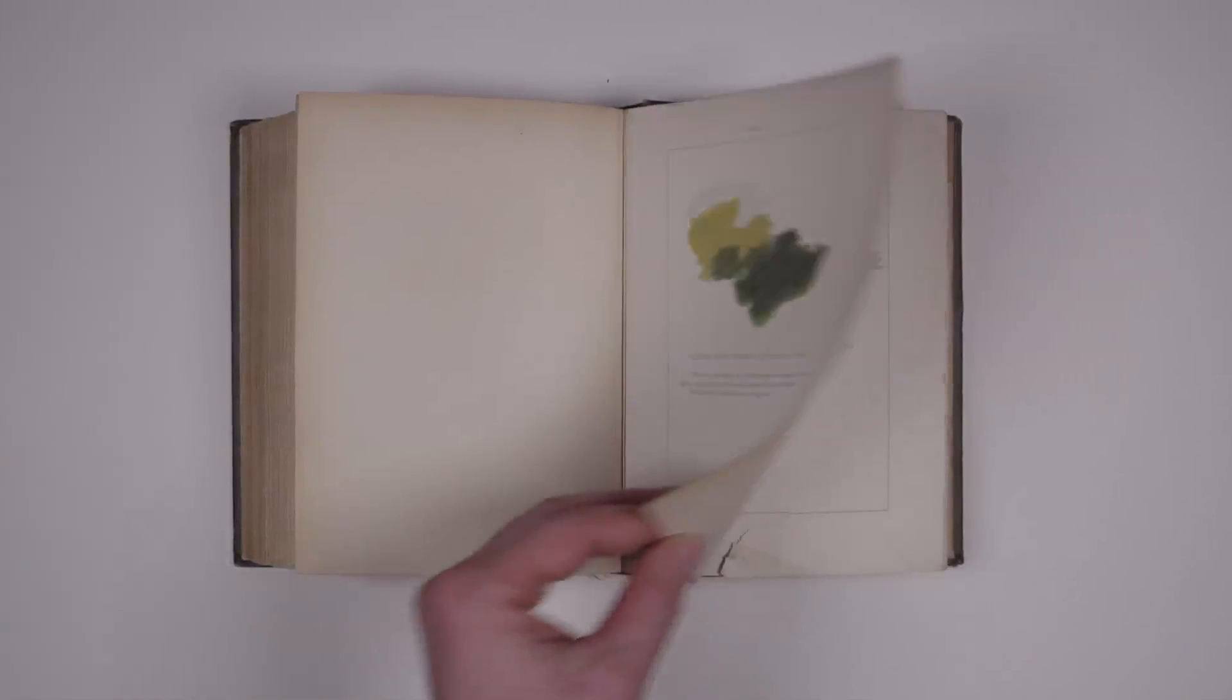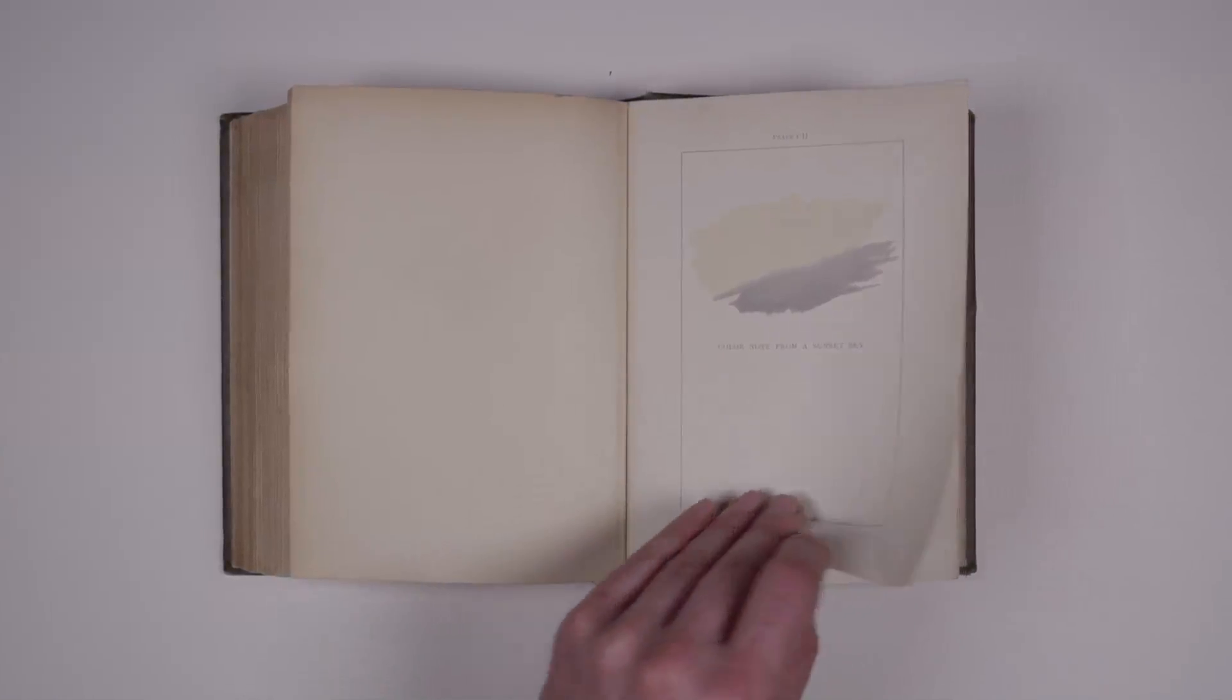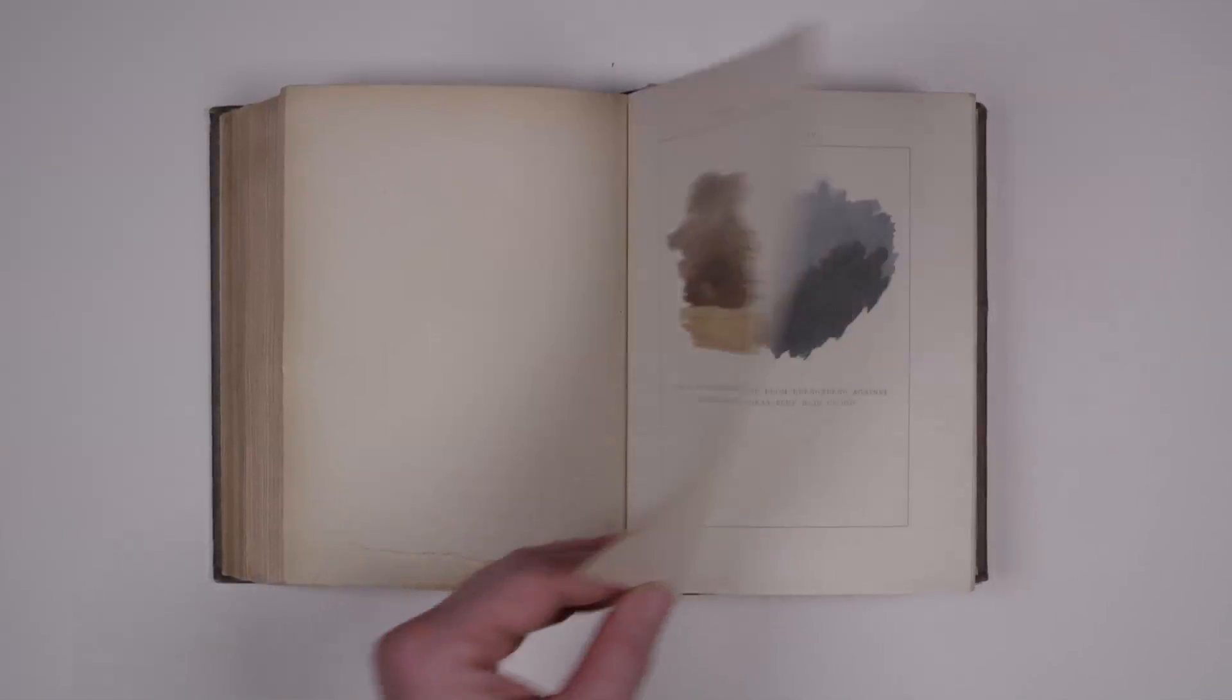The book also contains a watercolor series of artistic interpretations with poetic titles like Color Note from Bare Woods on the Edge of a Meadow and Color Note from a Shadow on White Ground.